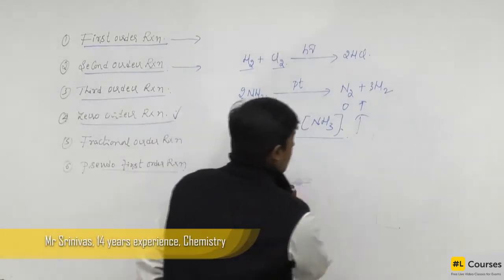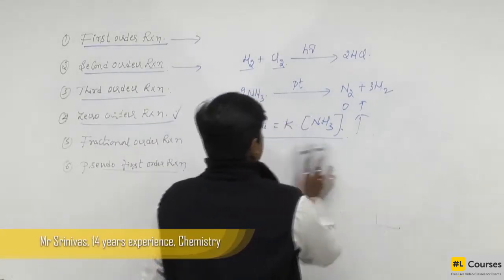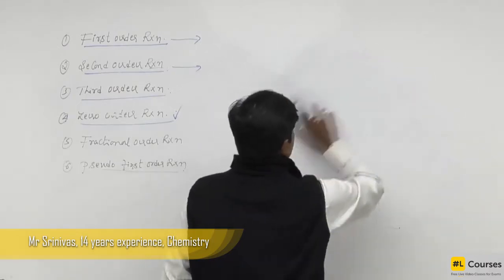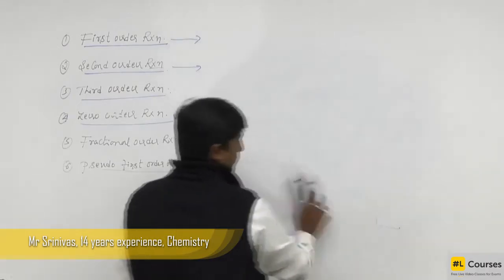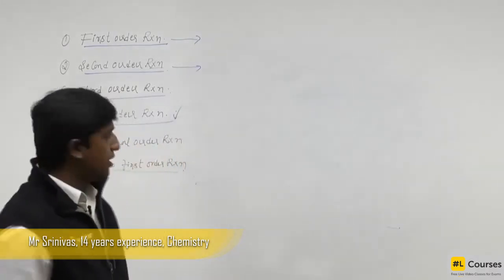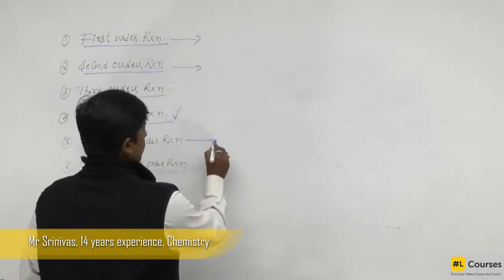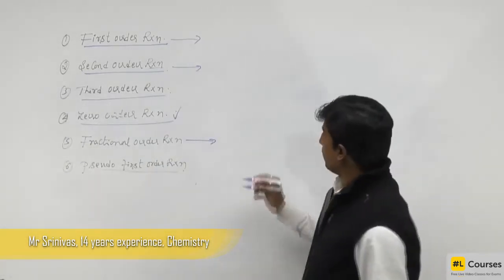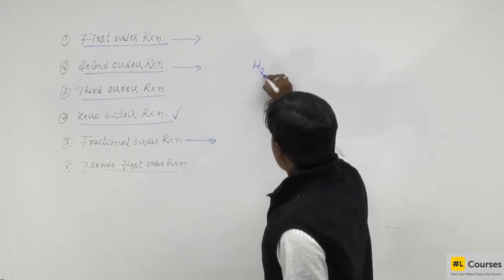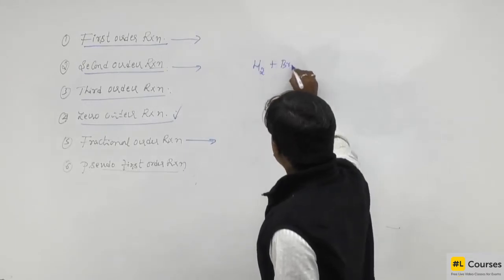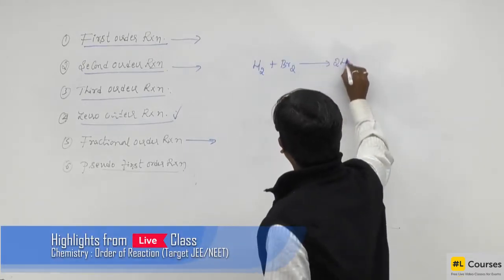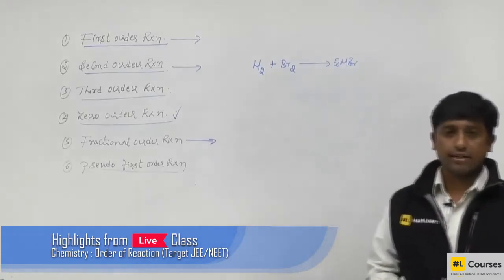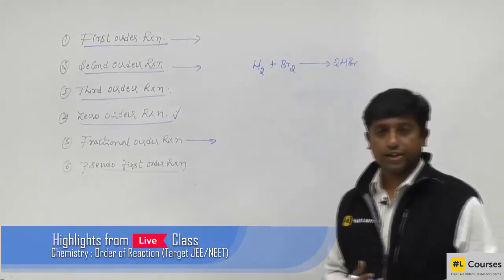An example for fractional order reaction: the reaction of hydrogen with bromine to give hydrogen bromide. This particular equation is an example for a fractional order reaction.